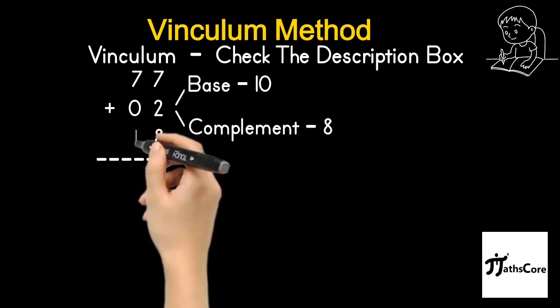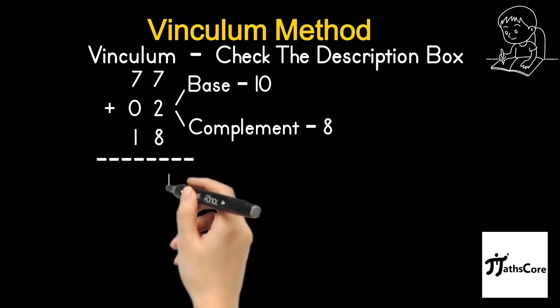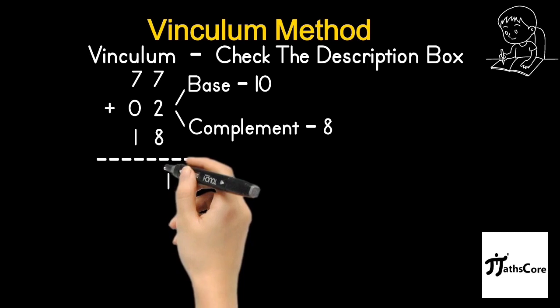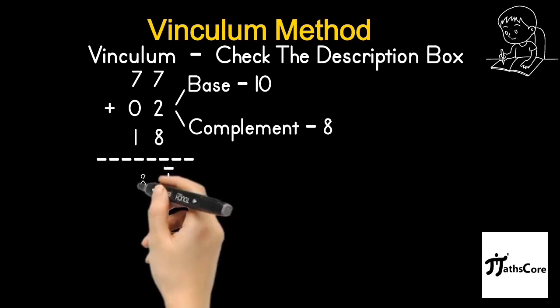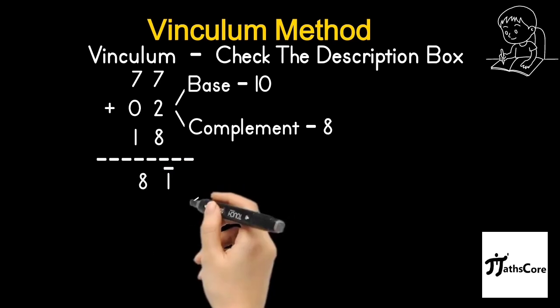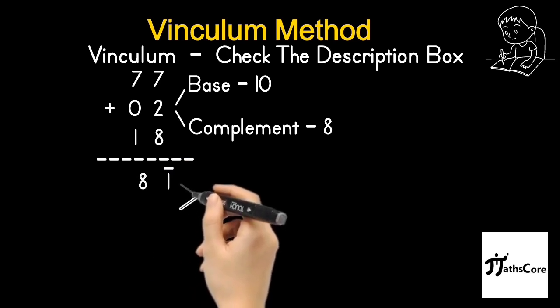Now use the concept: add the base, less the complement. So 7 minus 8 is equal to minus 1, and that we will consider in the form of vinculum. Vinculum 1, and 7 plus 1 is equal to 8. Now we got here vinculum number 8 vinculum 1.